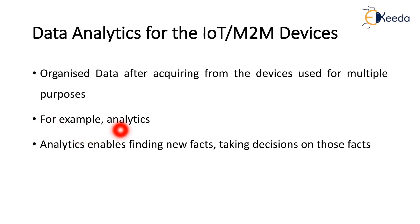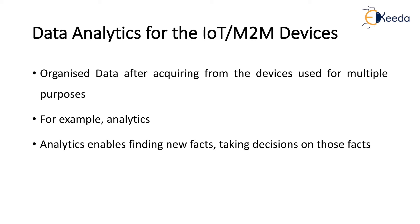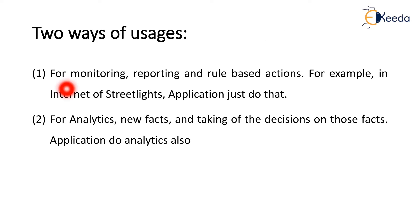Applications usefully use the data of devices in two ways. One is for monitoring, reporting, and rule-based actions — for example, the Internet of Street Lights application, which does just that. The other way is for analytics: finding new facts and taking decisions based on those facts, identifying the functions and usage of data analytics and data visualization for IoT applications and business processes.